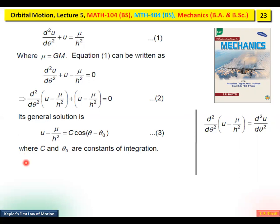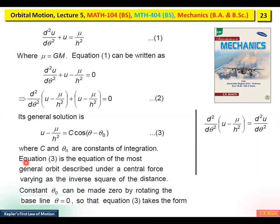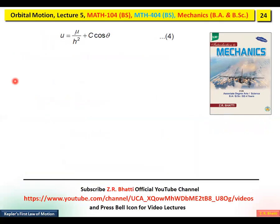C and θ₀ are constants of integration. Equation 3 is the equation of the most general orbit described under a central force varying as the inverse square of the distance — as in G·M·m/r², which is inverse square. The constant θ₀ can be made zero by rotating the base line (θ = 0). After that, the solution becomes: u = μ/h² + C·cos θ.